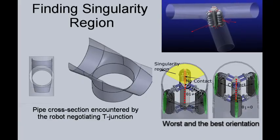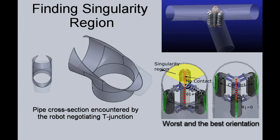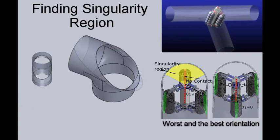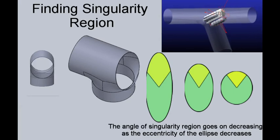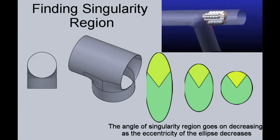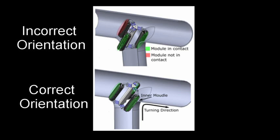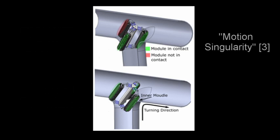When the robot is turning in the T-junction, it encounters different elliptical pipe cross sections of varying eccentricities. If the orientation of the robot is such that one of the modules loses contact with the pipe surface because of the elliptical cross section, it is defined as motion singularity, which was coined by Young and his team in their paper. In case of motion singularity, only two modules would remain in contact with the pipe surface and hence the robot would not have sufficient traction to negotiate the turn.